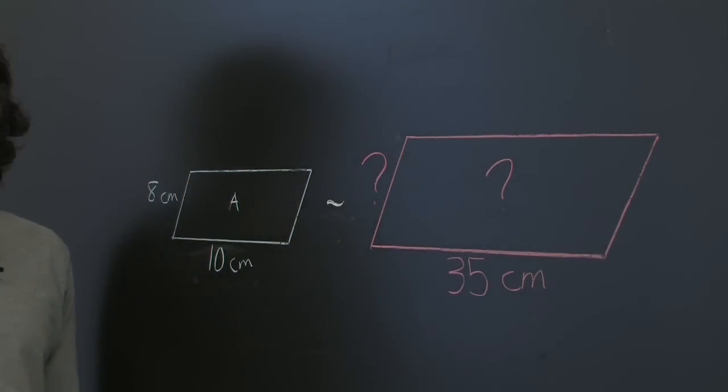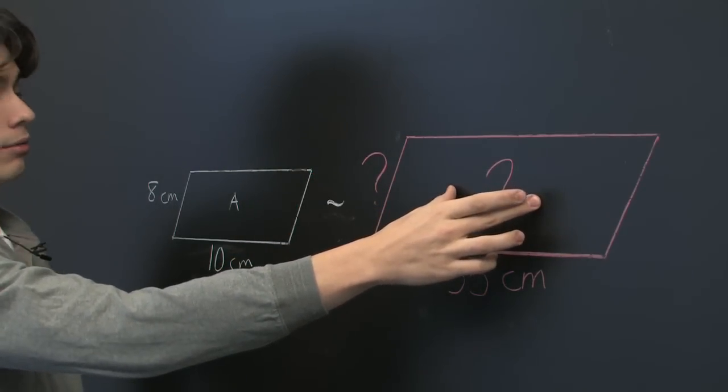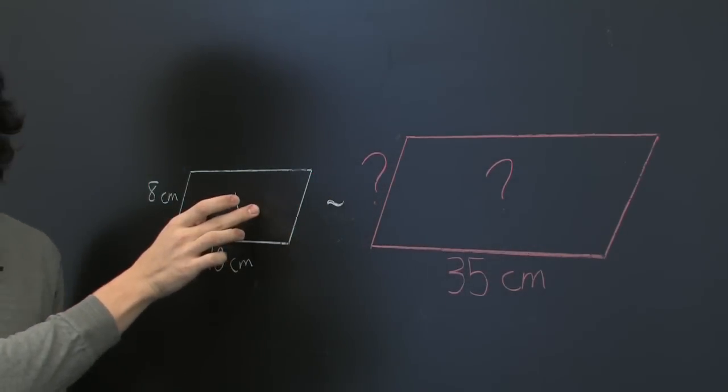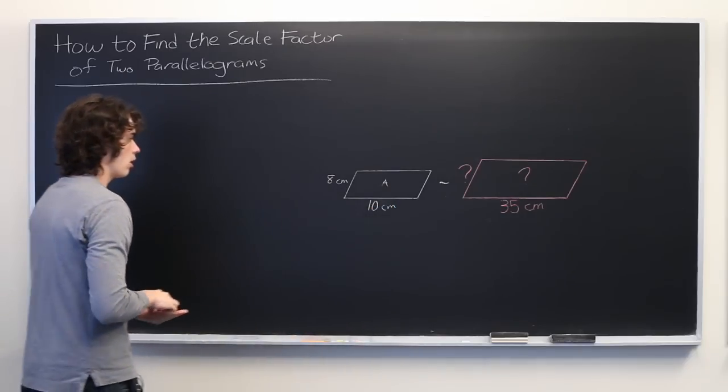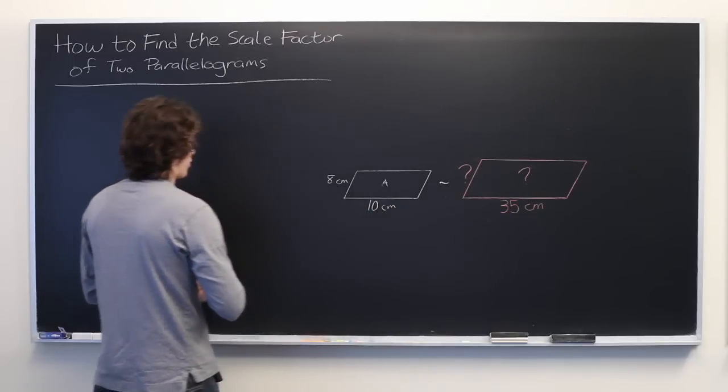and what we want to know is the length of this side and the area of this parallelogram as it relates to the area of this one. So we'll start by taking the two bottom sides and figuring out the scale factor from there.